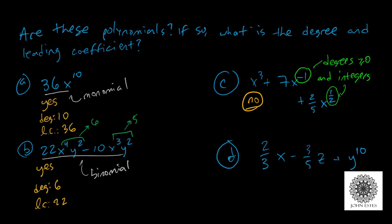Let's look at part D. This time I have 2 thirds x minus 3 fifths z plus y to the 10th. Is this a polynomial? Yes, it is. How do I know that? Well, I have positive exponents. They're all integer exponents. And it's okay to have more than one variable. Remember, that's not a big deal.